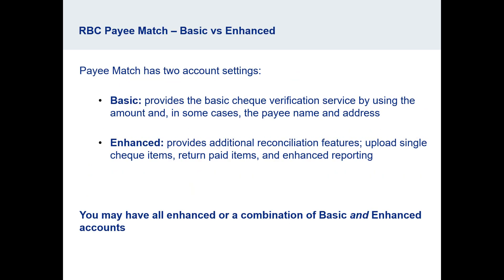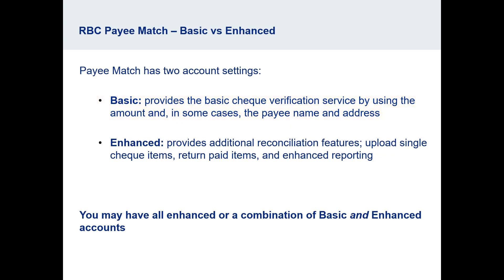Payee Match has two account settings: BASIC and Enhanced. BASIC provides the primary check verification service by using the amount and, in some cases, the payee name and address. Enhanced provides additional reconciliation features such as upload single check items, return paid items, and enhanced reporting.